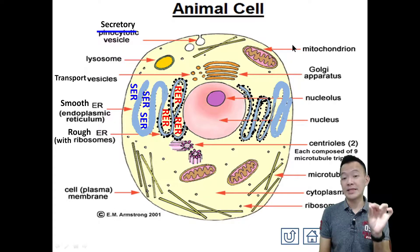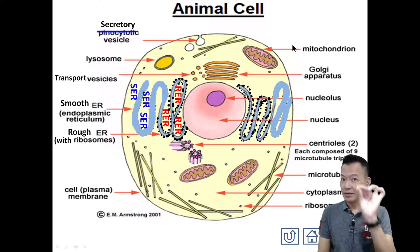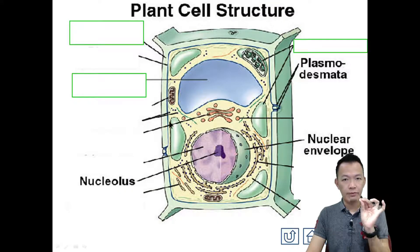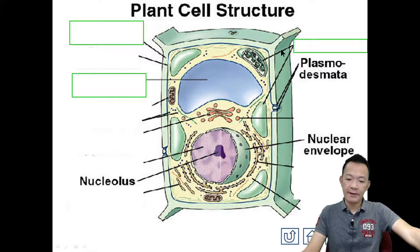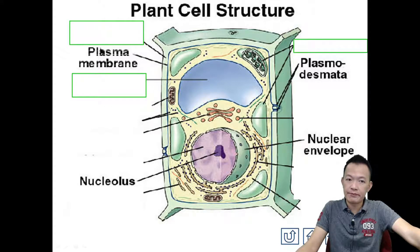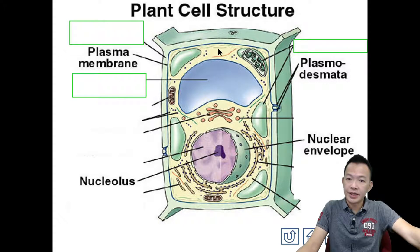Now we continue with the plant cell. 我们再看，我们try to run them and try to remember all the names slowly. 我们才开始它的故事好了. So turn to plant cell - 我们看植物细胞. So same as the animal cell, plant cell also has the plasma membrane.